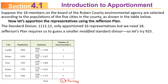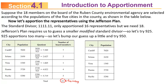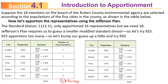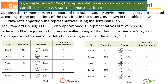We need to go a little higher, so let's try 950. Dividing by 950: Cardiff gives 7.389, Solana 2.558, Vista 1.621, Palma 3.916, and Pacific 5.568. Rounding down and adding up gives exactly 18. So under Jefferson's plan: Cardiff 7, Solana 2, Vista 1, Palma 3, and Pacific 5.